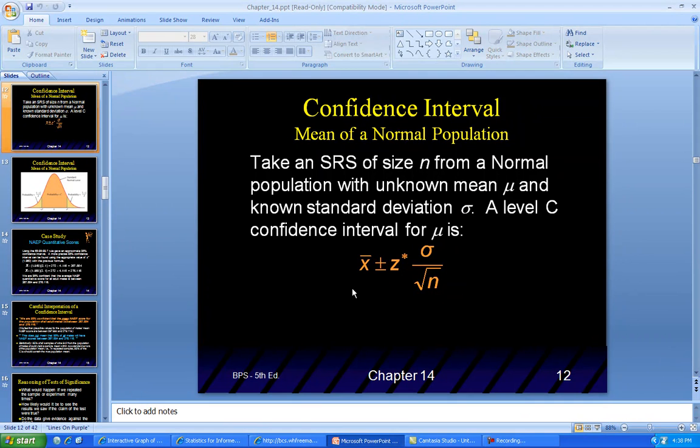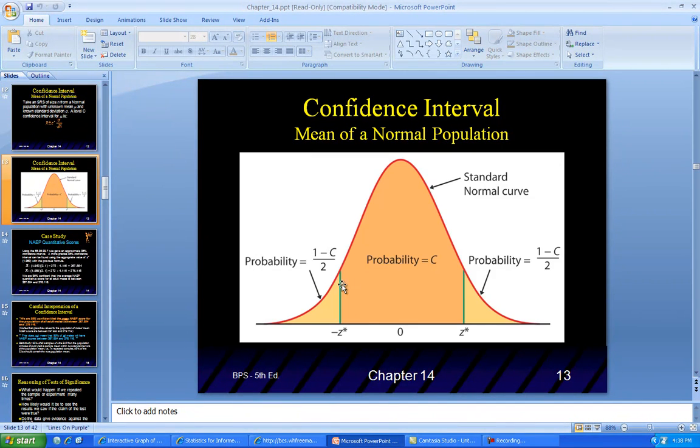The confidence interval looks like this. This is z-star over here, the whole value of this one. C is our confidence interval, from z-star to negative z-star.